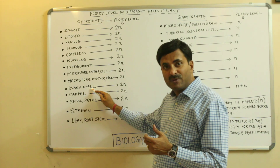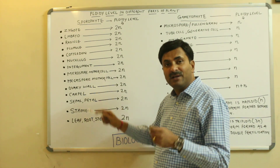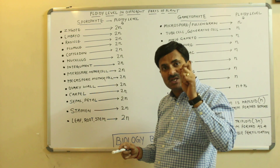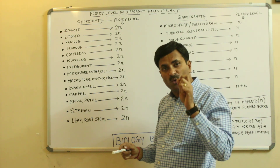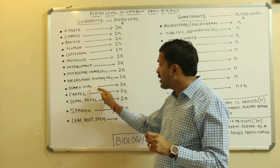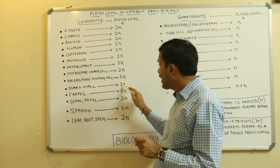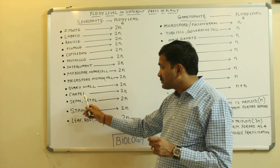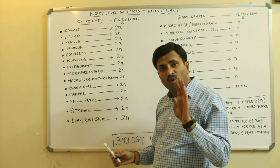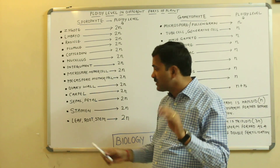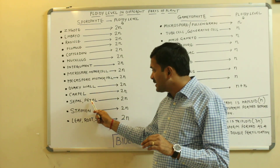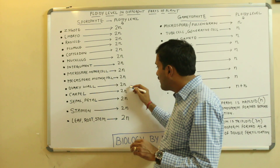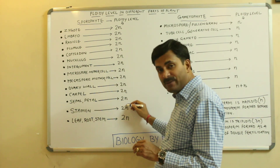Now, ovary wall. The carpel consists of three parts: stigma, style, and ovary, and the ovary is surrounded by the ovary wall, which also has the ploidy level of 2N. The four whorls of the flower — sepal, petal, stamen, and carpel — all have the ploidy level of 2N.